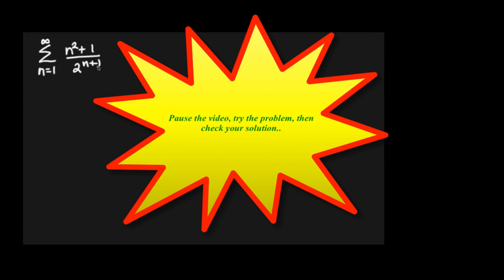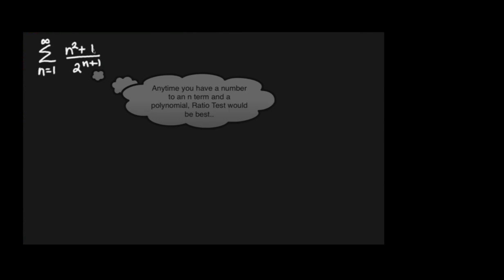I could do ratio tests. Anytime you see a number to the n, and it's got a polynomial with it as well, that should tell you ratio test right away.